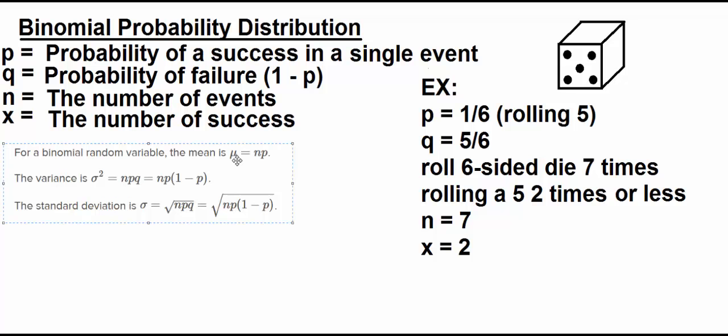So if you think of p being flipping a coin, two-headed coins, head and tail, probability of getting heads would be one out of two. So if you flip a coin ten times, your n is ten, your p is 0.5, you would expect to get heads five times. So your mean is 5.